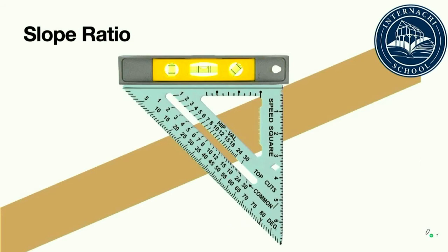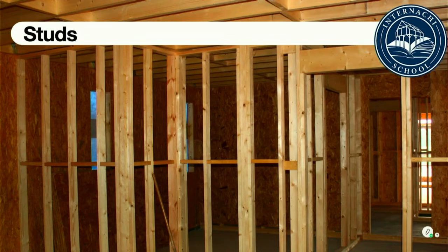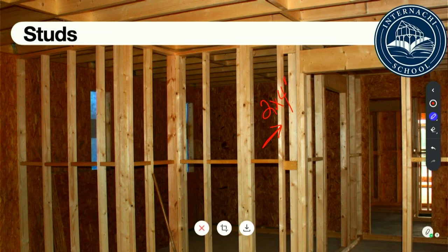The slope ratio represents a certain amount of vertical rise for every 12 inches of horizontal run. A 4-in-12 slope is expressed as 4 to 12; a 6-in-12 slope is expressed as 6 to 12. A framed wooden stud wall is an assembly of studs usually sized 2x4 or 2x6, spaced 16 or 24 inches on center. The studs are sandwiched between top and bottom plates. Double plating at the top is most common on load-bearing walls unless the roof rafters or trusses and floor joists stack directly over the studs.